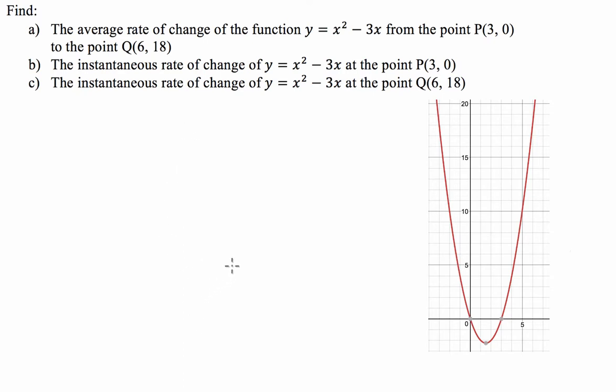So we're asked to find the average rate of change between two points as well as the instantaneous rate of change at the two points of a particular function: y equals x squared minus 3x. So we're given the point P, which is 3, 0. So that's here. Call that point P. And we're given the point Q at 6, 18. So that's here. Q.